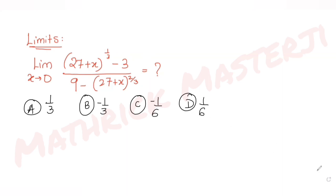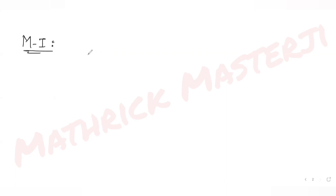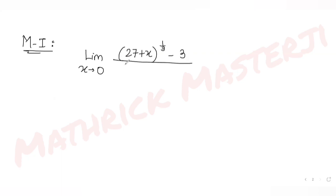Let's see the first general method. I'll write the limit as x tends to 0 of (27 + x)^(1/3) minus 3, divided by 9 minus (27 + x)^(2/3). Now, I want to use the idea of substitution.